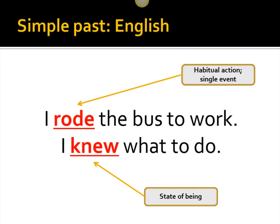The simple past — what is it? The simple past, like the sentence 'I rode the bus to work,' could be a single event — in the past, I rode the bus to work one time and that was it. Or it could be a habitual action: 'I rode the bus to work every day.' Or the simple past could also talk about a state of being: 'I knew what to do.' The main thing is, with the simple past, it's a one-verb construction — not a verb with a helping verb, like 'I have known what to do' or 'I have ridden the bus.'